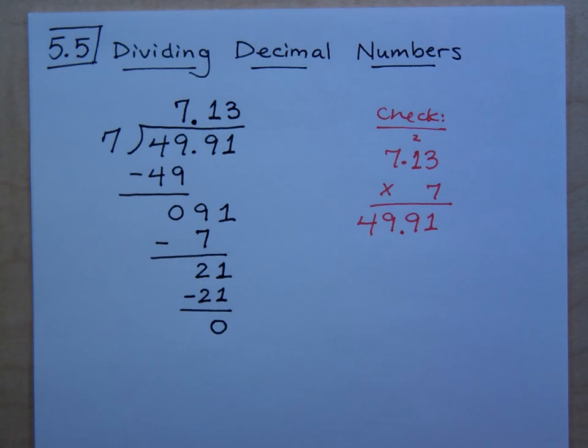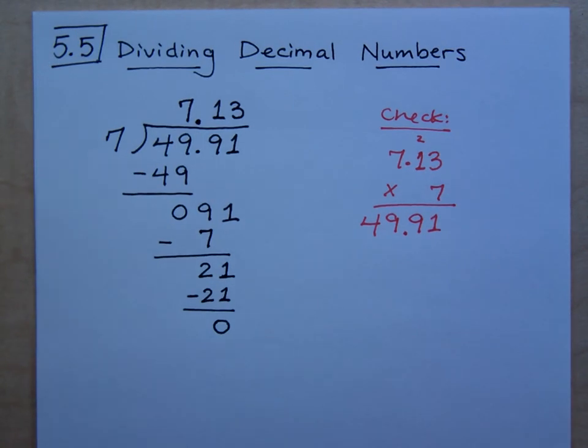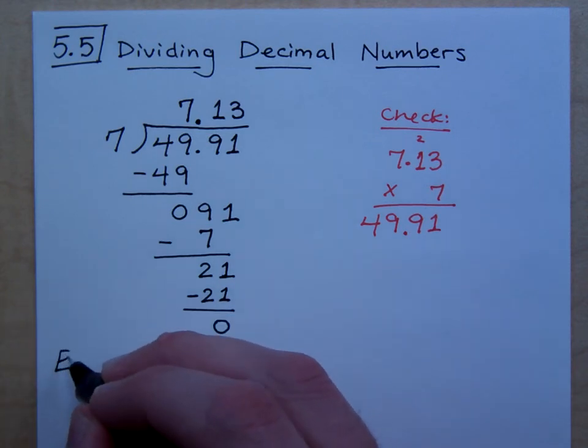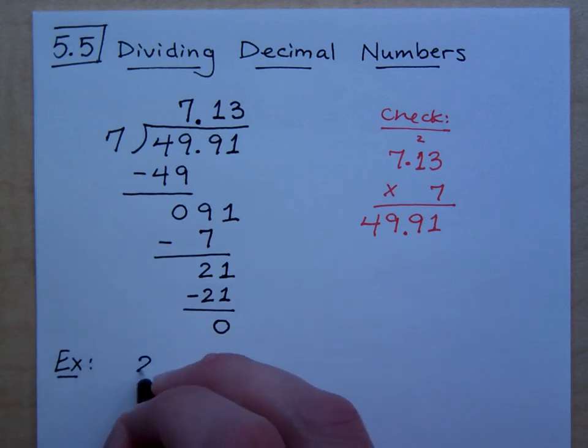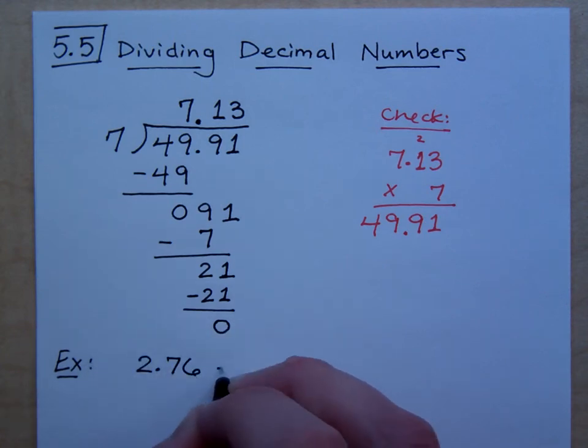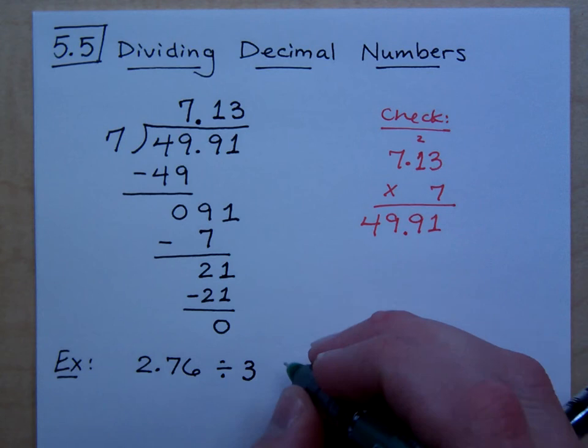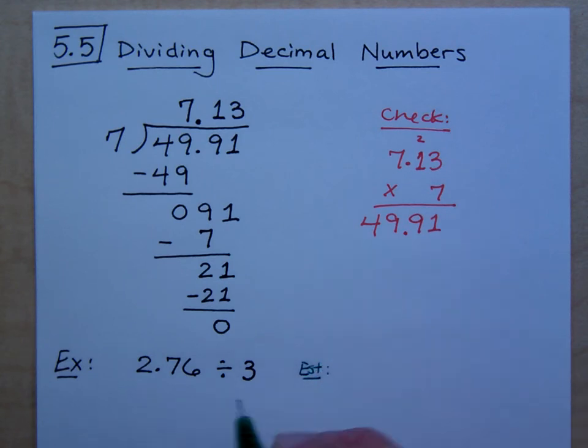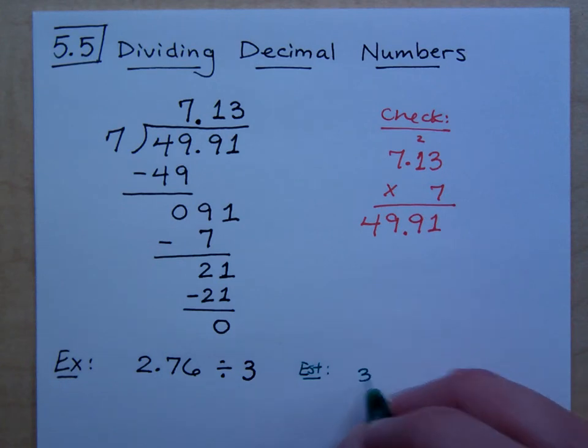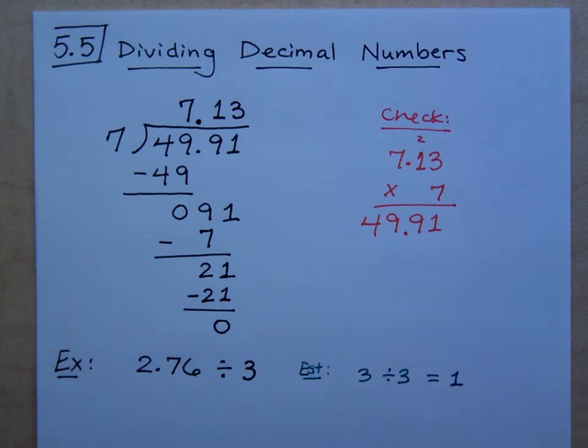Now I think we need to go back and make sure that we are neat and we line things up correctly. So let's do that for the next example. If I give you 2.76 divided by 3, if you had to estimate this, how would you round 2.76? You'll say this is about 3 divided by 3 is what? 1. So I expect an answer somewhere around 1, right?